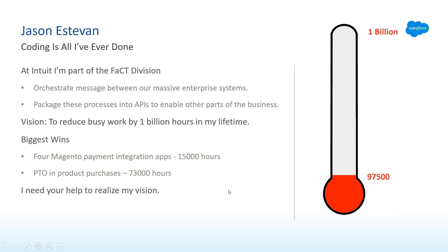I'm still quite far away from my billion hours. My team's two busiest APIs are one that allows customers to update their credit card from our online account system, and one to cancel their subscription with a button click from inside the product. Even though I've worked on these APIs a lot, they were already built when I joined the team, so I can't really take credit for those hours. So I'm on to plan B, which is to help others reduce busy work in their organization.